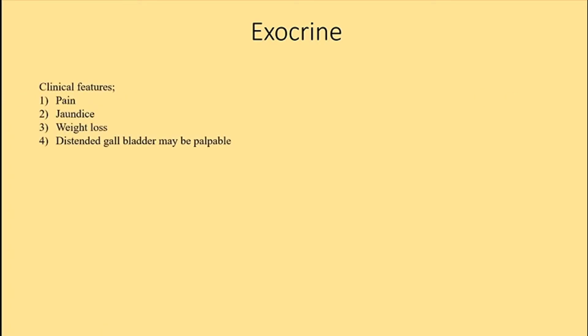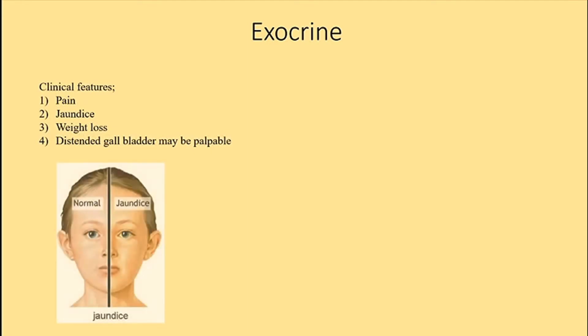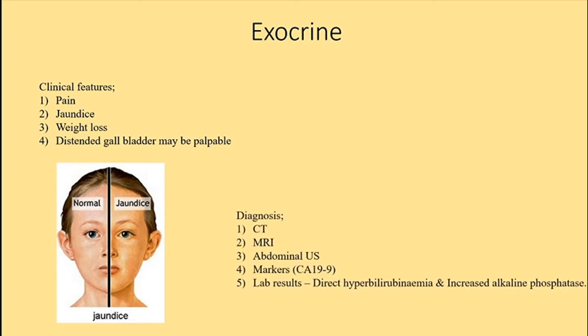Clinical features include pain in the epigastric region mainly, jaundice, weight loss, and a distended gallbladder that may be palpable. You can have hyperglycemia with glucosuria, known as new-onset diabetes mellitus, especially in people older than 60. Other features include unexplained fever, nausea and vomiting, and acholia — the absence of bile secretion.